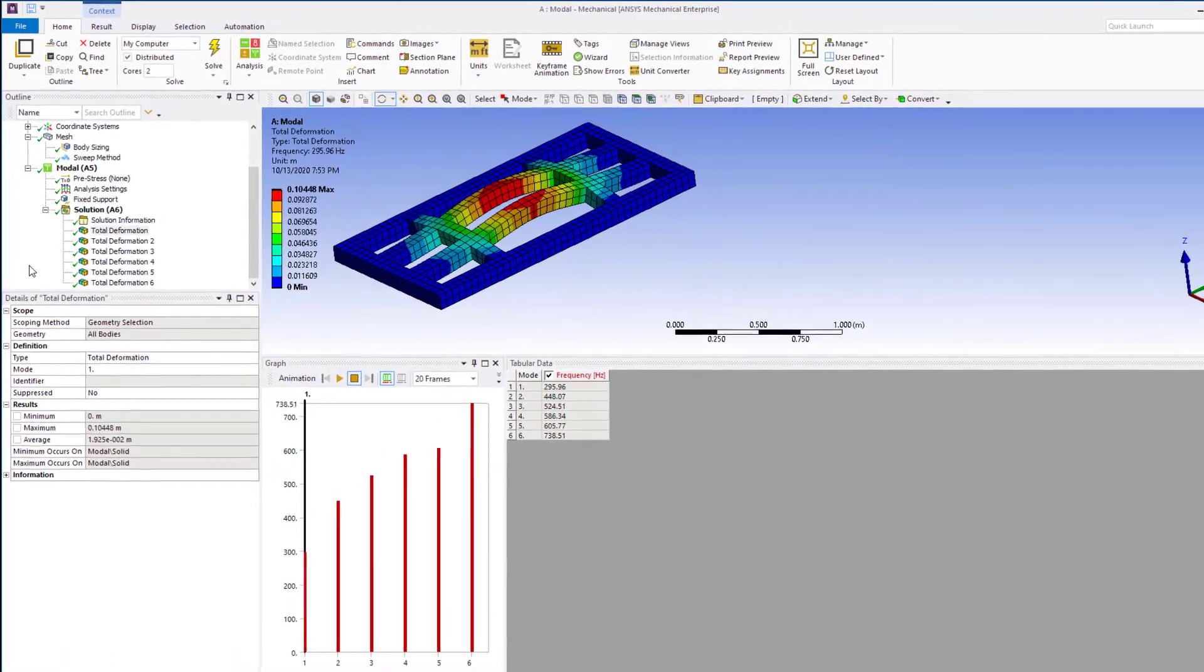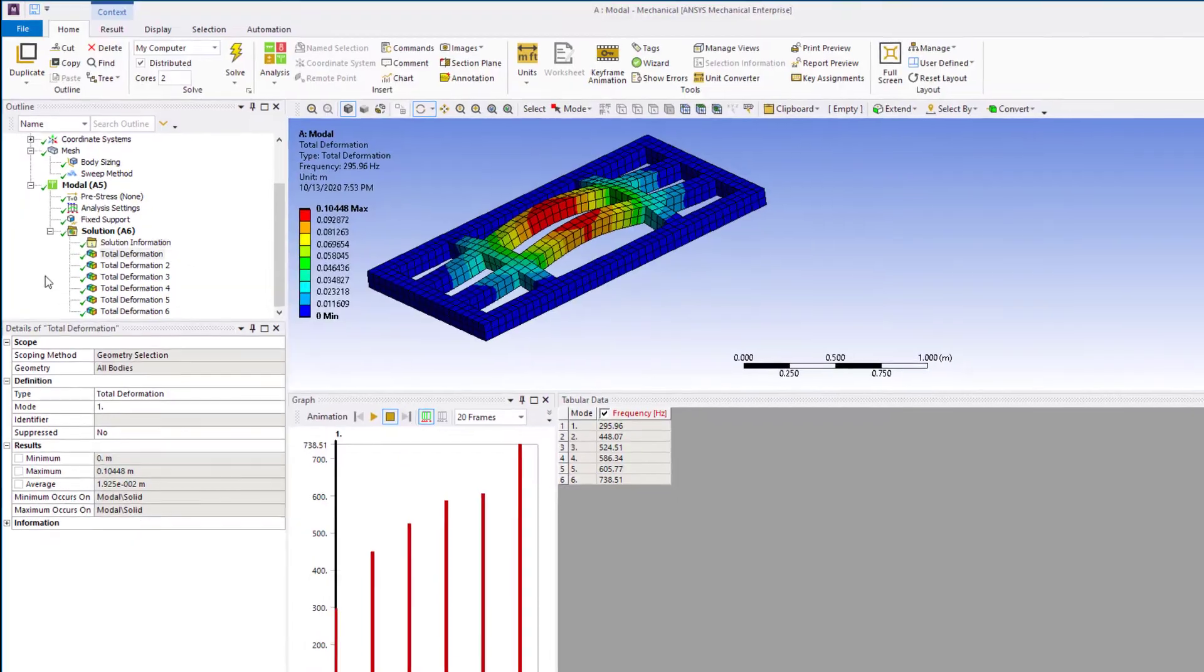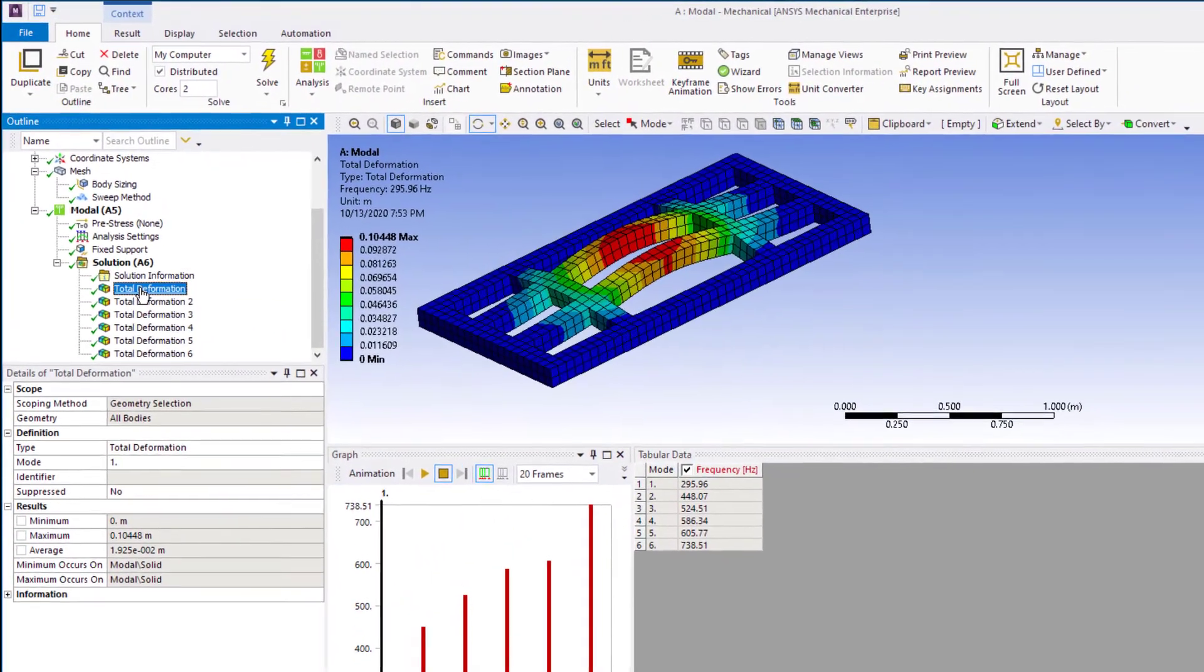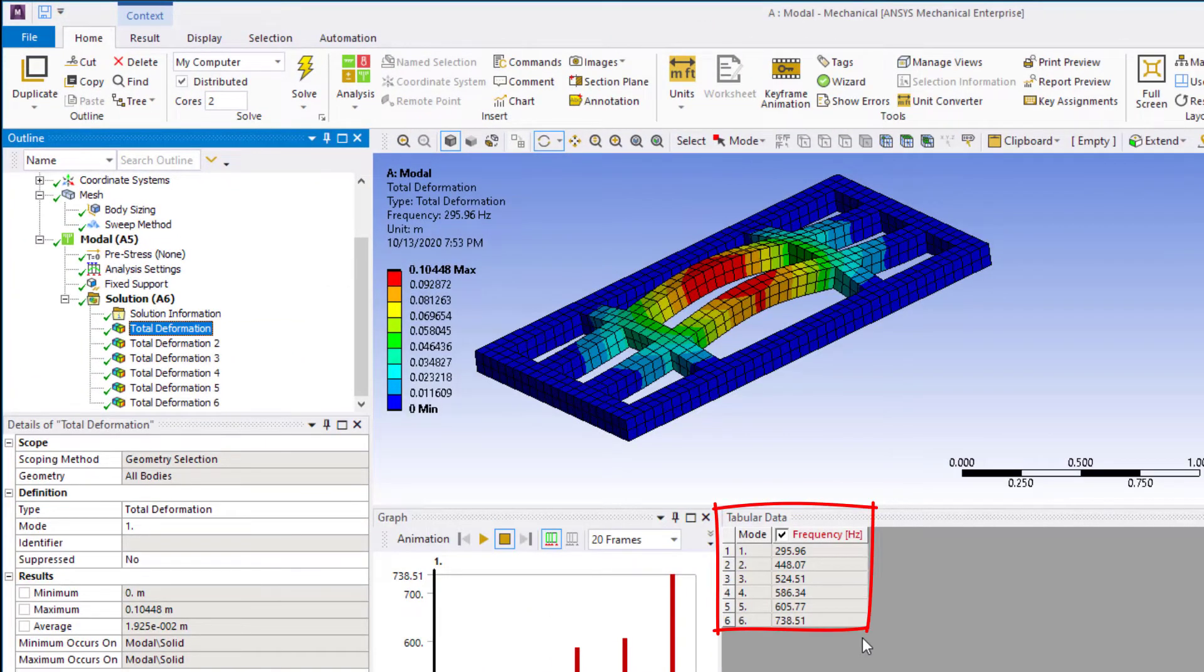Right-mouse click on the solution and evaluate all results. Click on the total deformation. This is mode 1. The tabular data shows corresponding natural frequencies.